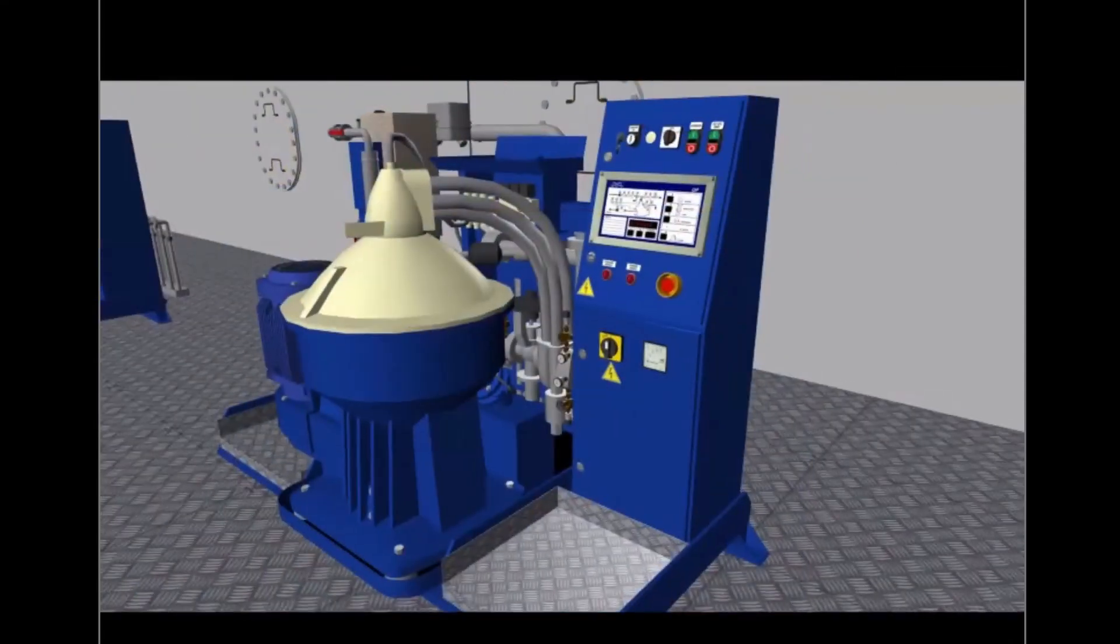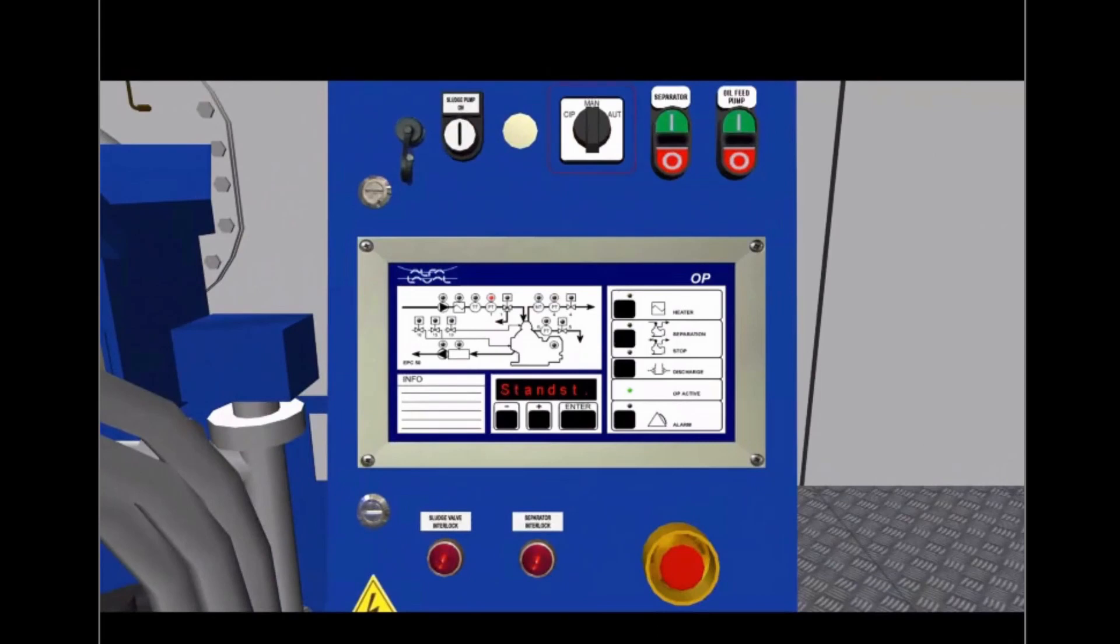Make sure the mode selection switch is in the manual position. Start the oil feed pump from the pump switch. Switch on the heater from the operator panel.